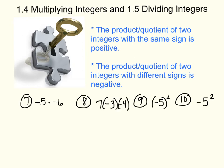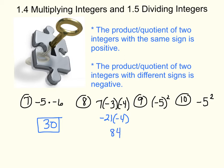Example number 7: negative 5 times negative 6. They're the same sign, so the answer is positive 30. The next one is 7 times negative 3 times negative 4. Take 7 times negative 3 first, which gives negative 21. Then negative 21 times negative 4 — same sign — gives positive 84.